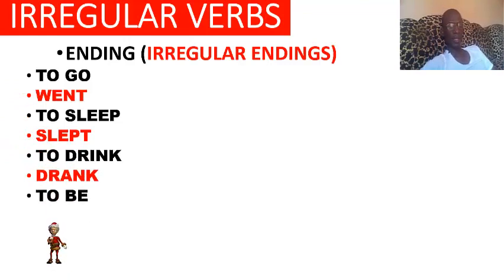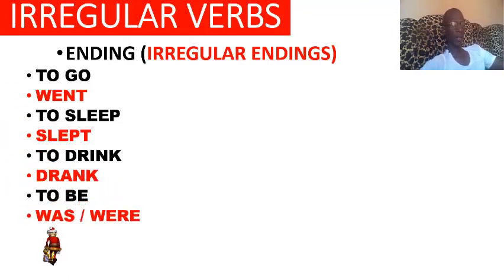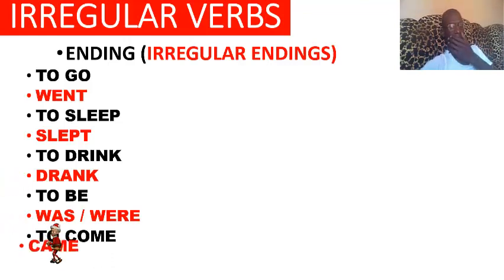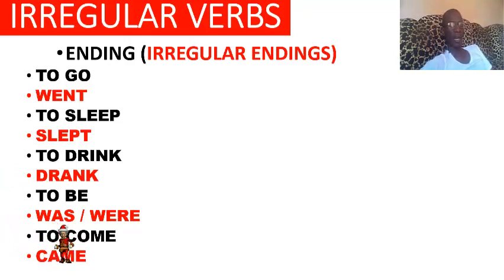To be → was or were (être) — it depends on the person: was for singular, were for plural. To come → came (venir). Donc vous voyez, les verbes irréguliers ont une terminaison irrégulière, donc à apprendre par cœur. You have to learn the irregular verbs by rote, or by heart.